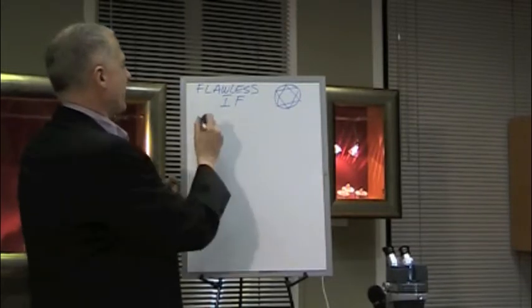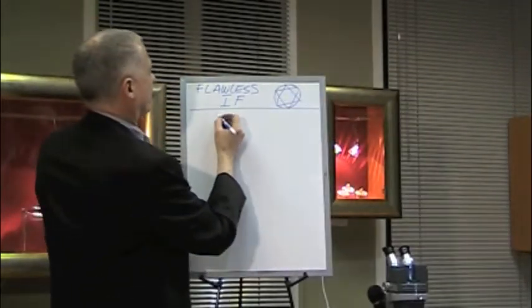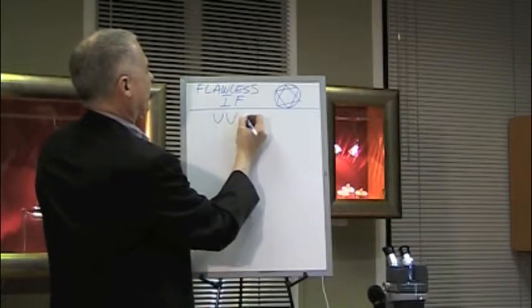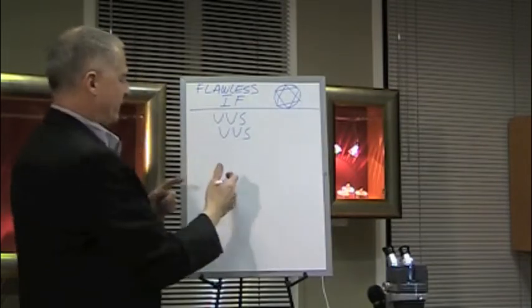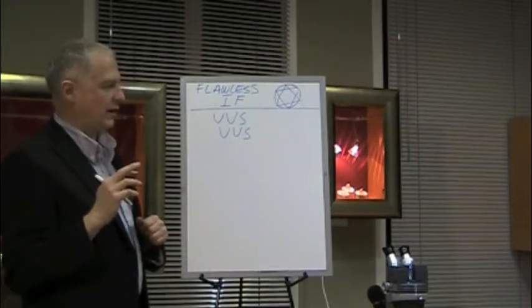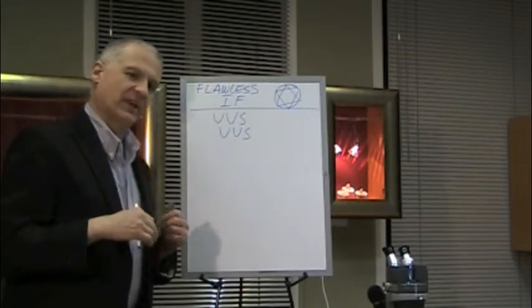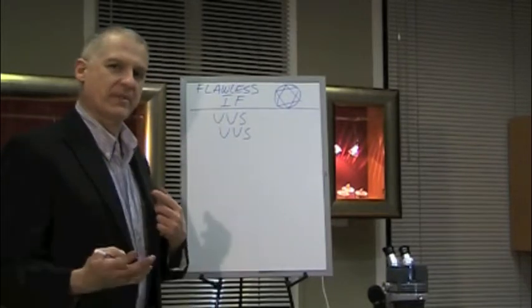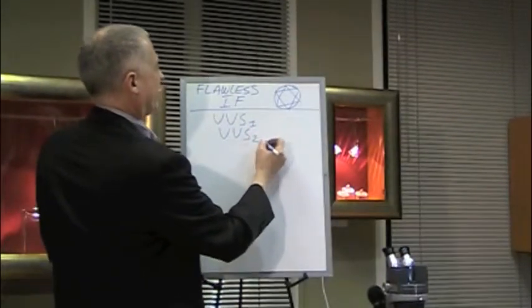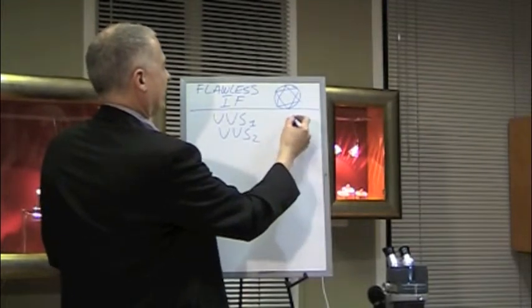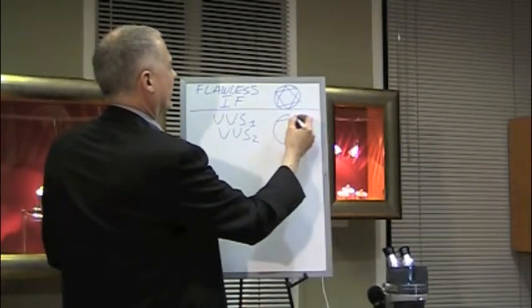Now one down from flawless or internally flawless is the VVS range. In all of the rest of the grades there's a one and a two, and the way I describe it is like a B plus or a B minus. So you have VVS1 and VVS2. Now we'll just draw one diamond here.